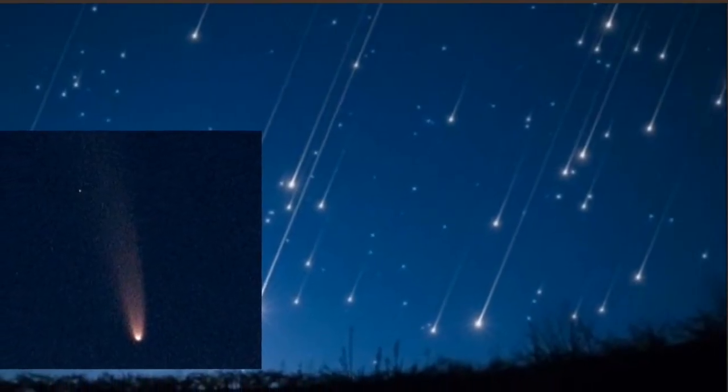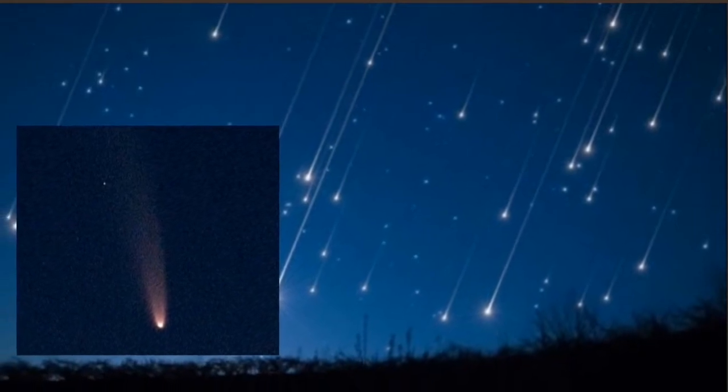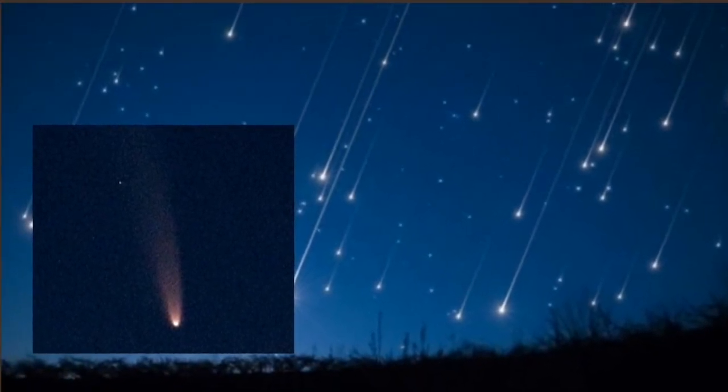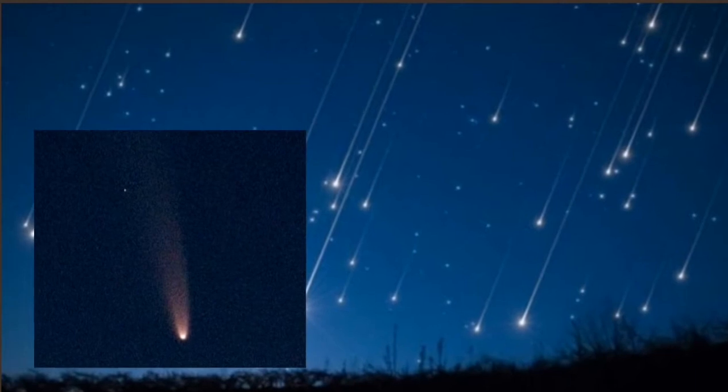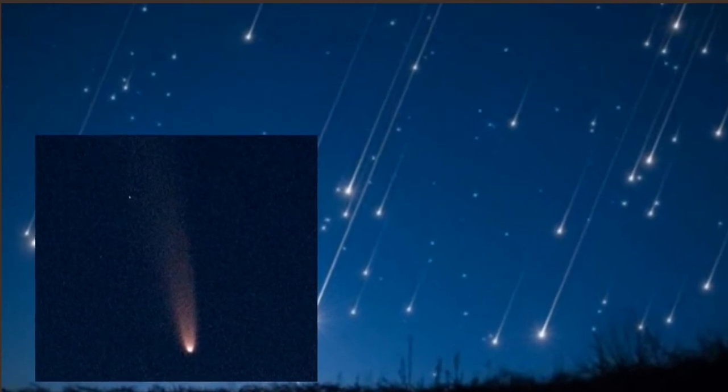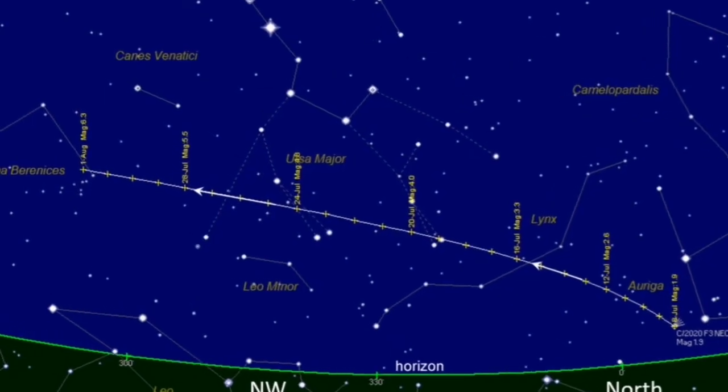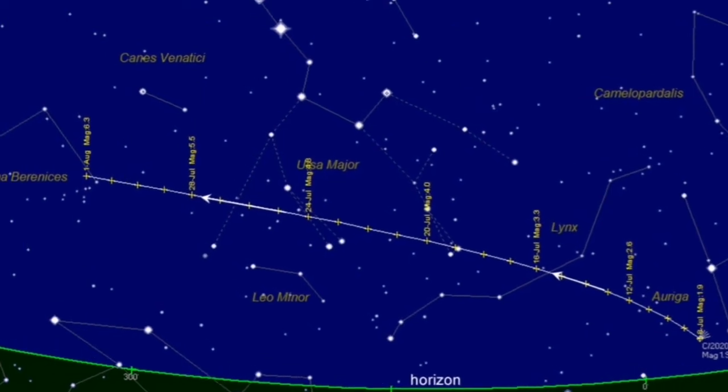Remember, you can see with a pair of binoculars the comet Neowise, which is also fading. Comet Neowise is now located under the Big Dipper, Ursa Major. In this star chart, you can see its position up to August 3rd.